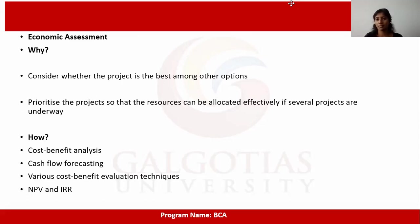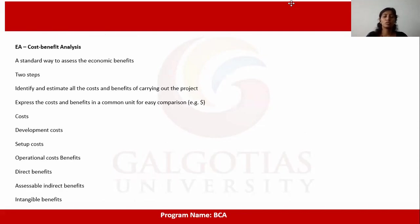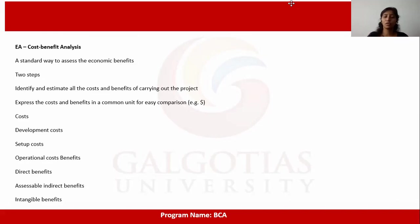When doing an economic assessment, we must know whether the project is cost-beneficial, what cash flow it involves, and what kind of cost-benefit analysis applies. The standard way to assess economic benefits involves two steps: identify and estimate all the costs and benefits of carrying out the project, then express the costs and benefits in a common unit for easy comparison.